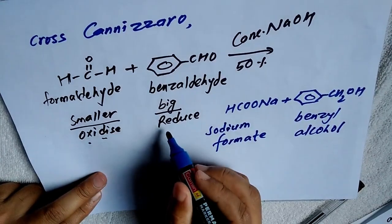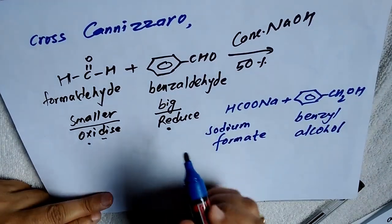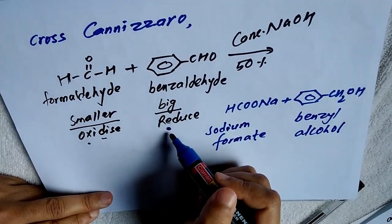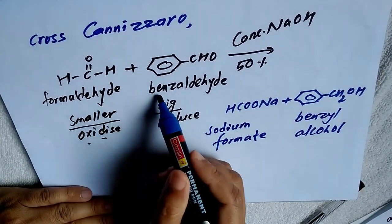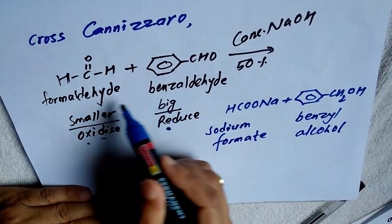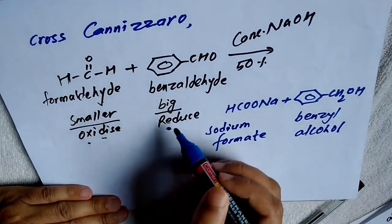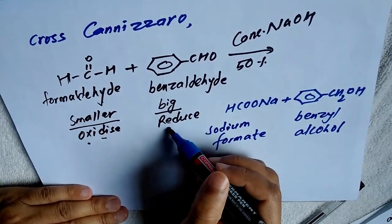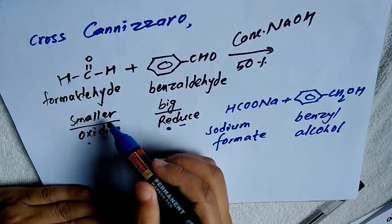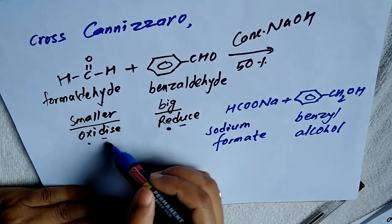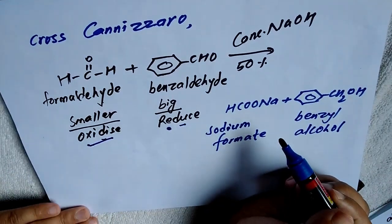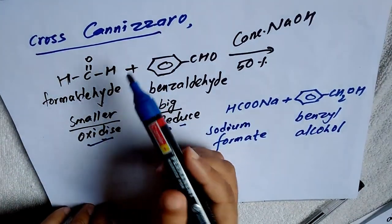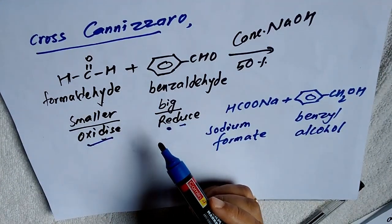So the trick to remember: if the same aldehyde is present, one is oxidized and another is reduced. If two different aldehydes are present — both without alpha hydrogen — the bigger carbon-chain aldehyde is reduced and the smaller carbon-chain aldehyde is oxidized. This is the trick to remember for the cross Cannizzaro reaction.